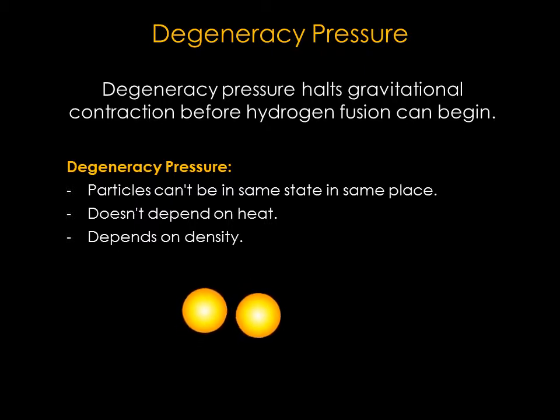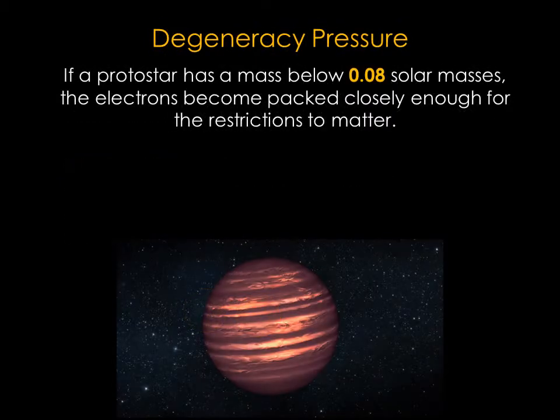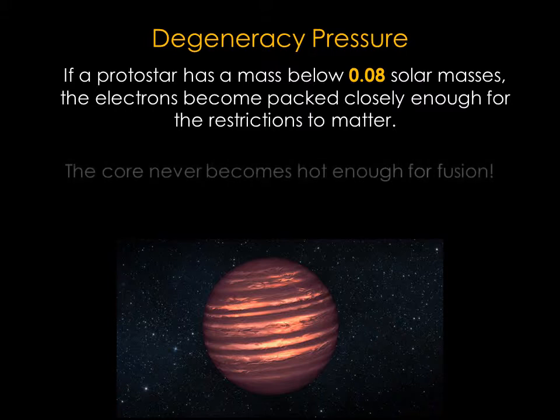Under most circumstances, the restrictions on particle spacing have little effect on the motions or the locations of electrons. But if a protostar has a mass below 0.08 solar masses, the electrons become packed closely enough for the restrictions to matter. These protostars are too small and there's not enough room for all the electrons. Degeneracy pressure halts the contraction and the core never becomes hot enough for fusion.